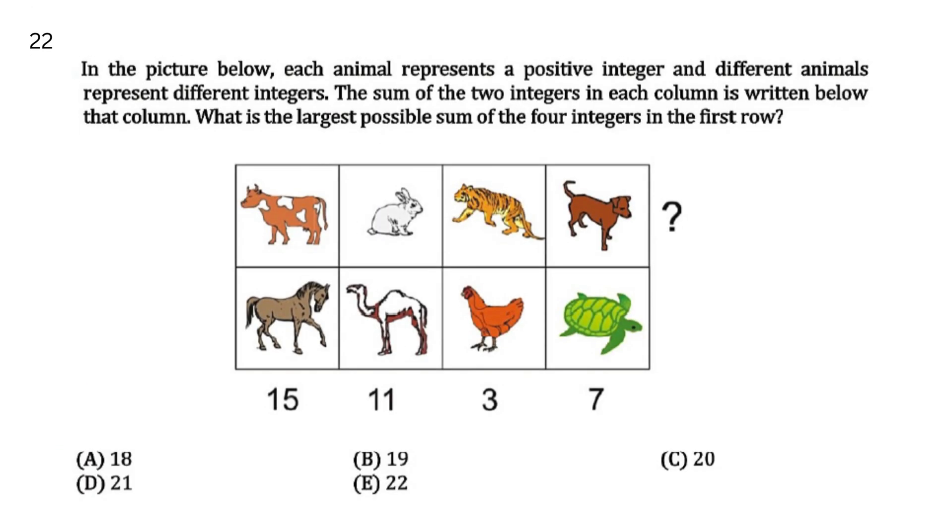In the picture below, each animal represents a positive integer, and different animals represent different integers. The sum of the two integers in each column is written below that column. What is the largest possible sum of the four integers in the first row?